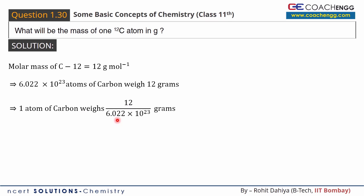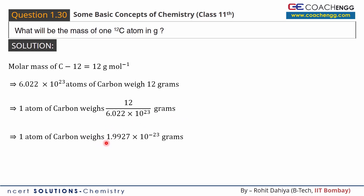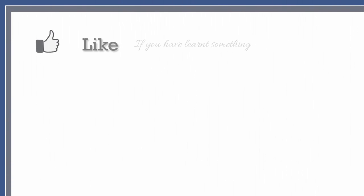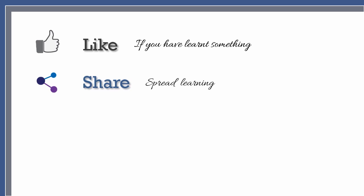So the mass of one carbon atom is 1.9927×10⁻²³ grams. This is the required answer. Thank you so much for watching this video.